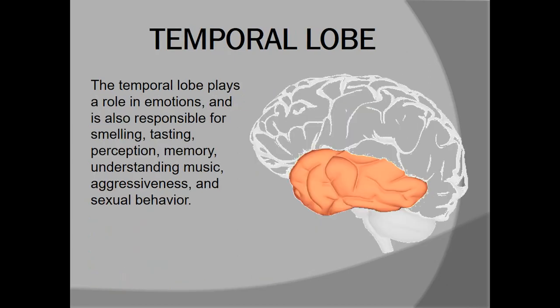Coming to the temporal lobe, it plays a very important role in emotions, smelling, tasting, hearing, different perceptions, and also memory and different kinds of behaviors.